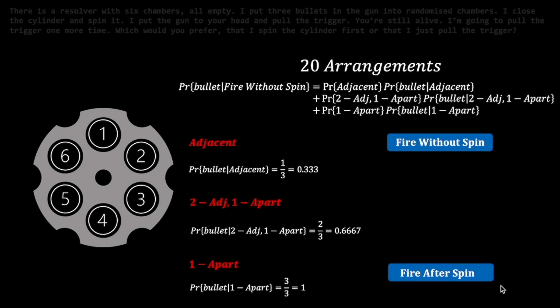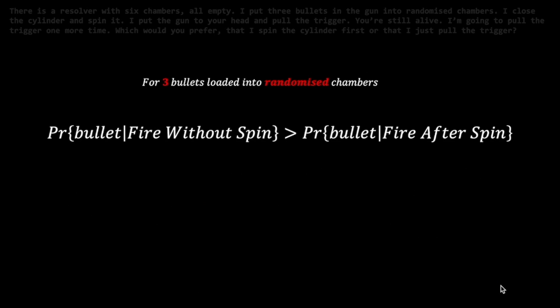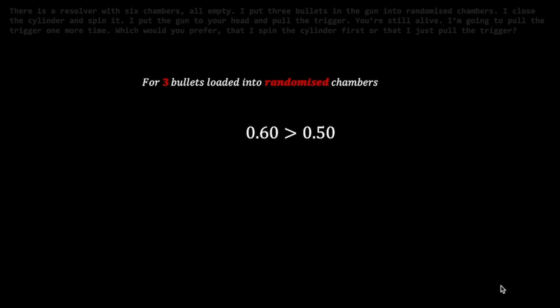With all this in place, the probability of encountering a bullet without a re-spin is 3 over 5, or 0.6. For the same probability with a re-spin, this is simply three bullets out of six chambers, or 0.5. Since the former has a higher probability than the latter case, the candidate should fire after a re-spin.